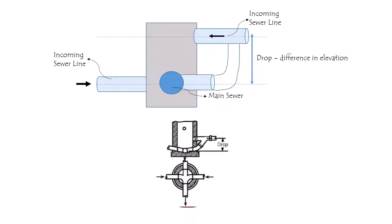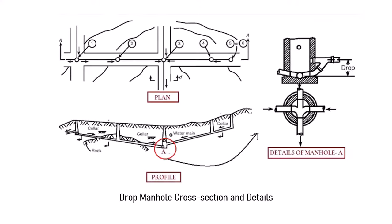As shown in the figure, points number one, two, three, four, five, and six are some of the points where a manhole is being constructed. Here we are going to concentrate on manhole number three, which is a drop manhole and whose detailed drawing is shown in the figure.